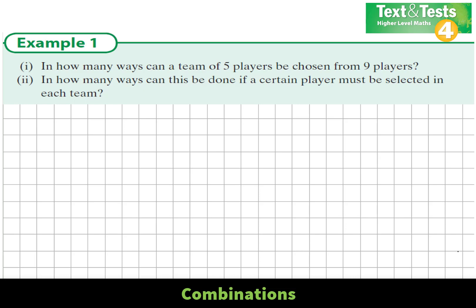In how many ways can a team of 5 players be chosen from 9 players? This is a combinations question. How many different combinations or selections can we make of 5 players out of 9?